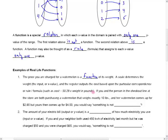Now, if you and a person in the checkout line at the store are both purchasing a watermelon that weighs exactly 10 pounds, and her watermelon comes up for $2.90, but your watermelon comes up for $4.50, right? You have the same input, but you have different outputs. You'd say, hey, wait a minute, that's not right. Something is not functioning.